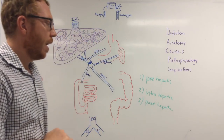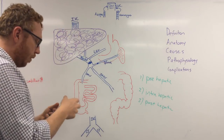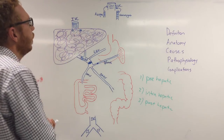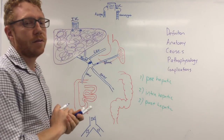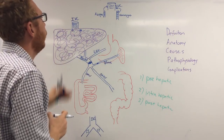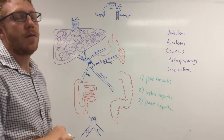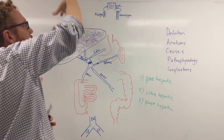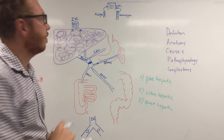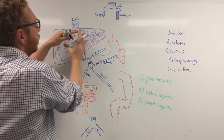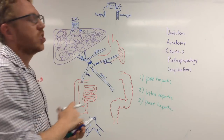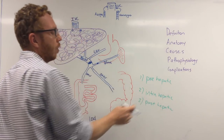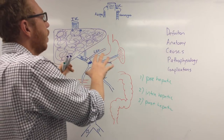Moving to the post-hepatic causes — these are generally to do with outflow. You could have a constriction or blockage within the left or right hepatic vein draining into the IVC, or pressure coming back down on the IVC such as found in pregnancy. If it's coming from the heart, right-sided heart failure will push blood back and slow flow through. Constrictive pericarditis is another post-hepatic cause.